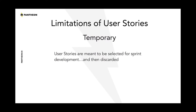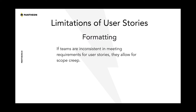However, there are also limitations to using user stories. They're really only meant to be used for sprint development — meant to be developed for that specific task of estimating work for a sprint, putting it in there, moving through the stages of the sprint, and then discarded. They're not meant to be a permanent resource for the project documentation. The other limitation, which I hinted at before, is that if the team is inconsistent in meeting requirements for the user stories, they allow for scope creep.